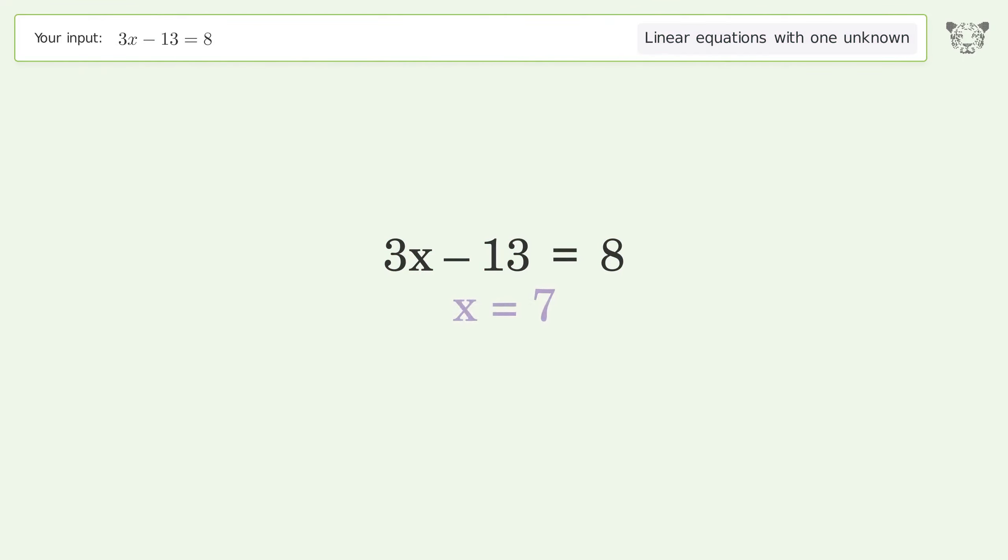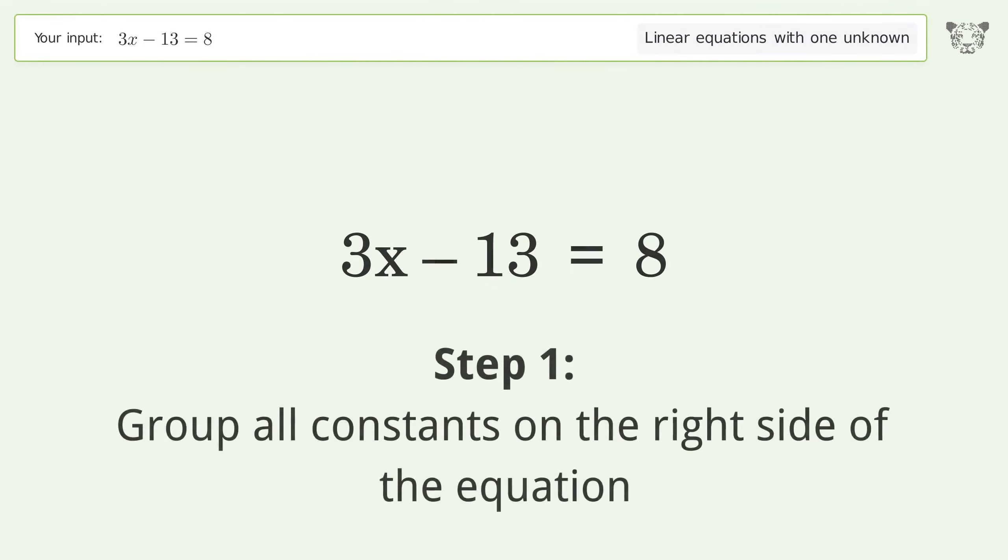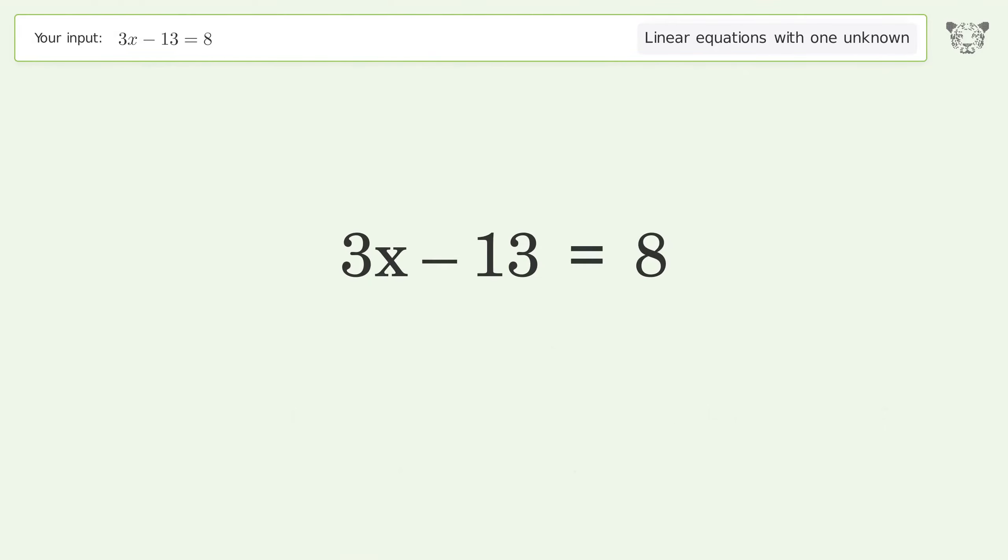You asked Tiger to solve. This deals with linear equations with one unknown. The final result is x equals 7. Let's solve it step by step.